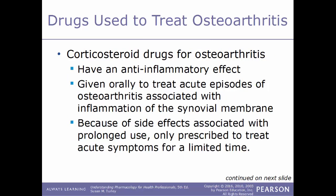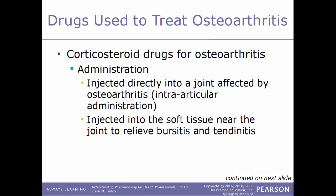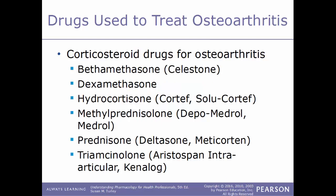Another type of drug used to treat osteoarthritis are corticosteroid drugs. These act by having an anti-inflammatory effect and are given orally to treat acute episodes of osteoarthritis associated with inflammation of the synovial membranes. Due to side effects associated with prolonged use, they are only prescribed for acute symptoms for a limited time. Administration may involve injection directly into the affected joint — known as intraarticular administration — or into the soft tissue near the joint to relieve bursitis or tendonitis.